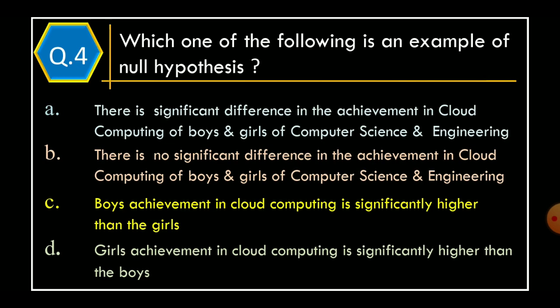Question 4: which one of the following is an example of a null hypothesis? Option A: there is a significant difference in the achievement in cloud computing of boys and girls of computer science and engineering. Option B: there is no significant difference in the achievement in cloud computing of boys and girls of computer science and engineering.